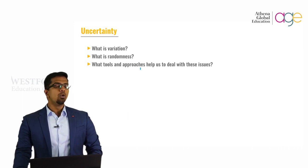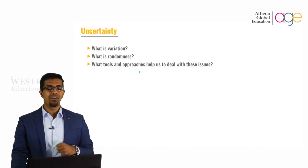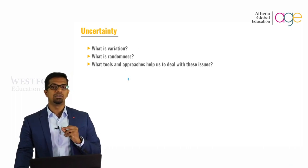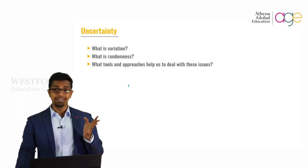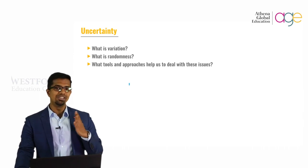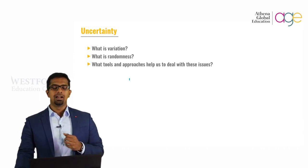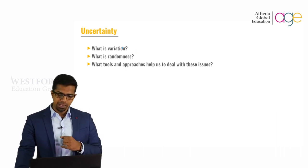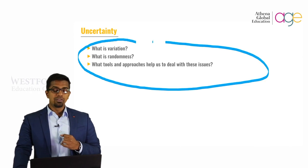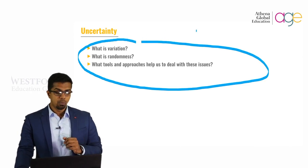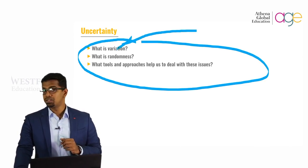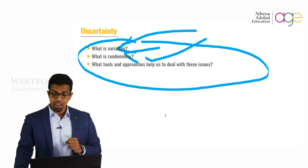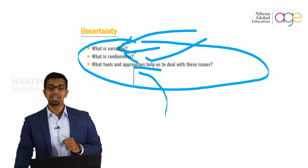There is an old principle called the Mehrabian principle, where there's always a 20% chance of uncertainty in anything. So it's always an 80-20 scenario you're looking at. If you look at your supply chain, you have to look at three different things: one is variation, two is randomness, and three are the tools and approaches.